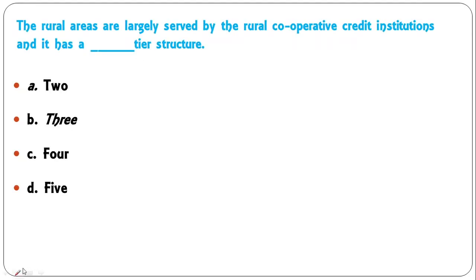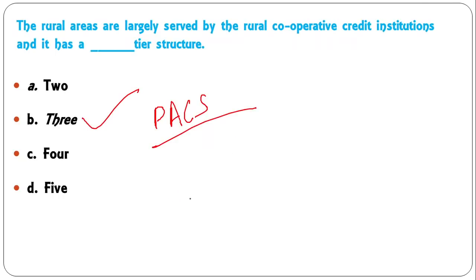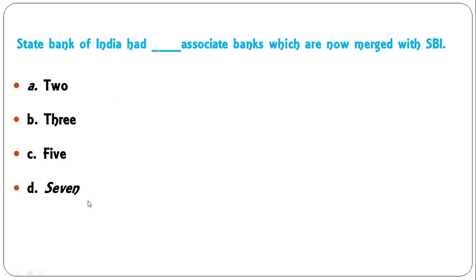Rural areas are largely served by rural cooperative credit institutions, which have a three-tier structure. At the top is the state cooperative bank, at the district level is the district cooperative bank, and at the village level there is a society called PACS — Primary Agriculture Credit Society.